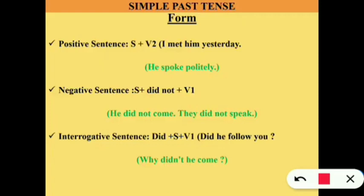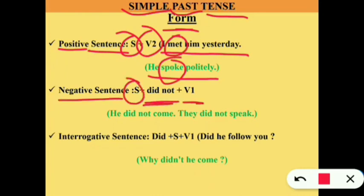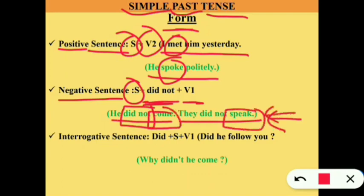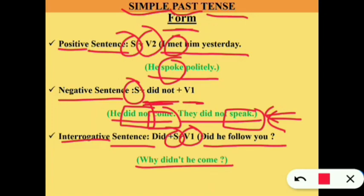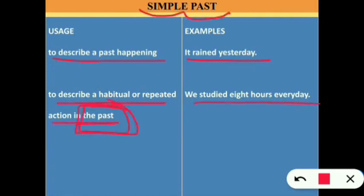Now let's move to past tense. Simple past tense: in a positive sentence, the form is subject + verb 2. Example: 'I met him yesterday' (met is verb 2), 'He spoke politely' (spoke is verb 2). In a negative sentence: subject + did + not + verb 1 — 'He did not come,' 'They did not come.' In an interrogative sentence: did + subject + verb 1 — 'Did he follow you?' 'Why didn't he come?' Uses: to describe a past happening ('it rained yesterday'), or a habitual/repeated action in the past ('he studied eight hours every day').